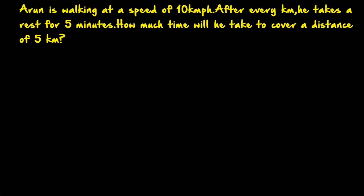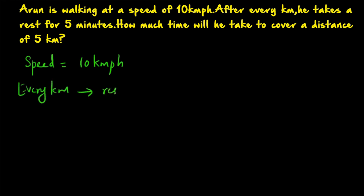Now the second question: Arun is walking at a speed of 10 km per hour. After every km he takes a rest for 5 minutes. How much time will he take to cover a distance of 5 km? It is the same kind of question. Arun's speed is 10 km per hour, and after every km he takes a rest of 5 minutes.